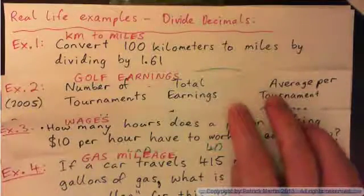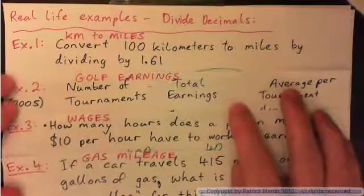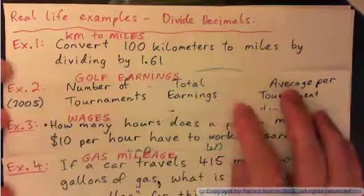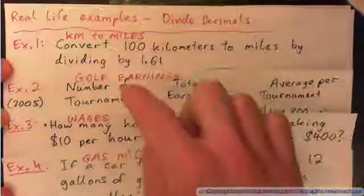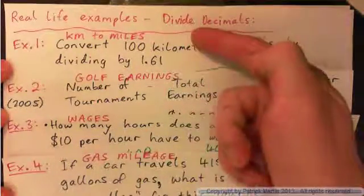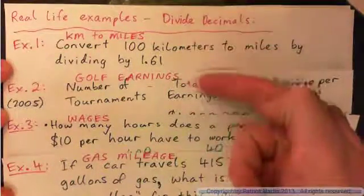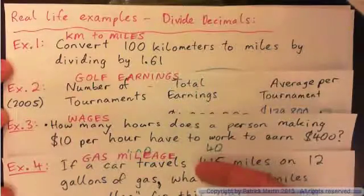In this video we're going to do some real life examples where we divide decimals. We'll start with examples 1, 2, 3 and 4: kilometers to miles, golf earnings, wages, and gas mileage.